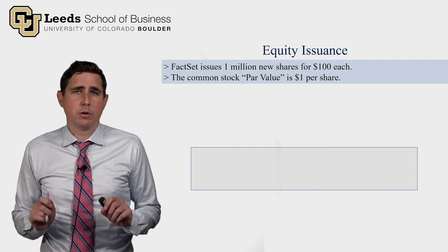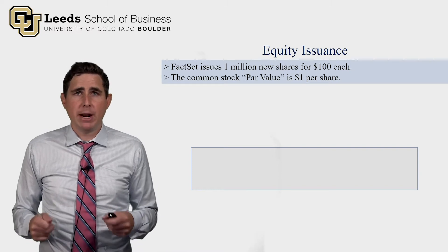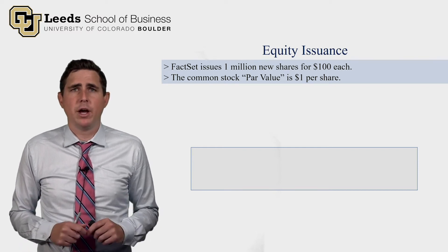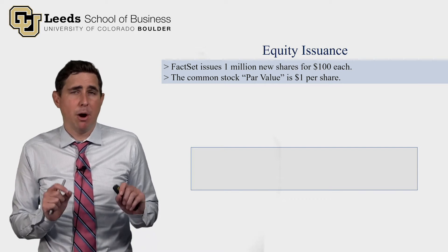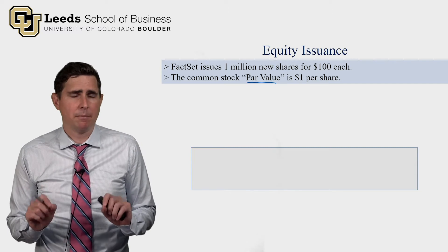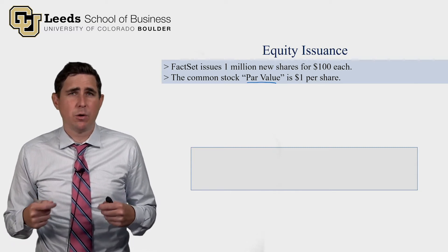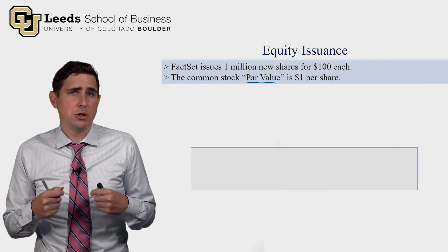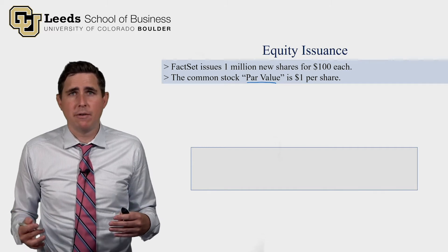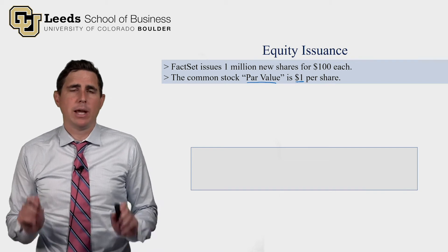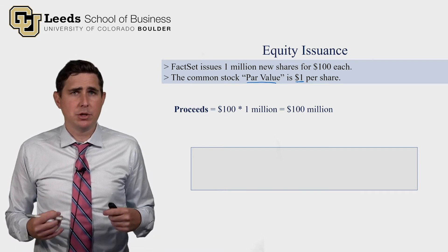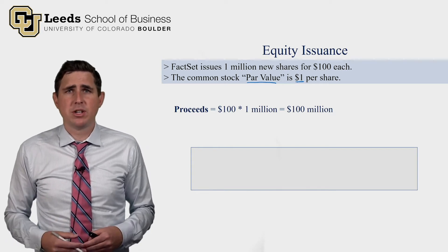Let's talk about equity issuance. FactSet wants to raise equity capital and bring in new owners, so they issue 1 million brand new shares for $100 each. The common stock par value is $1 per share. The proceeds to FactSet are $100 per share — they issue a million shares, so they get $100 million.